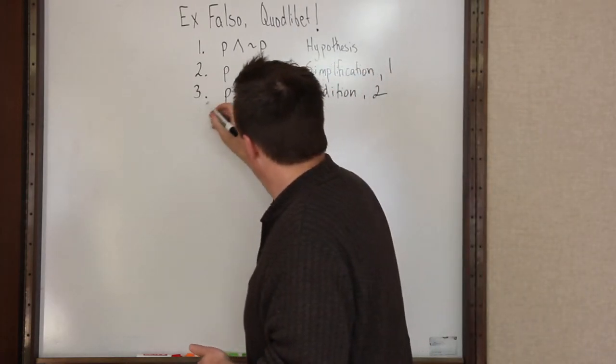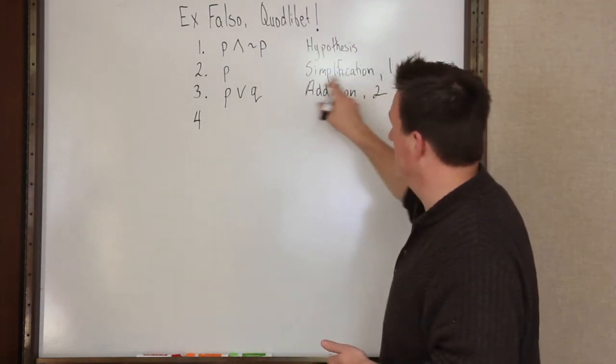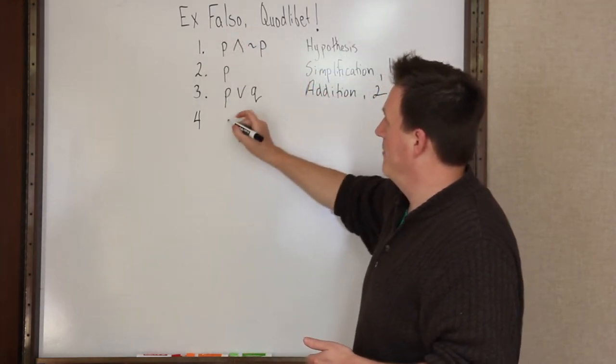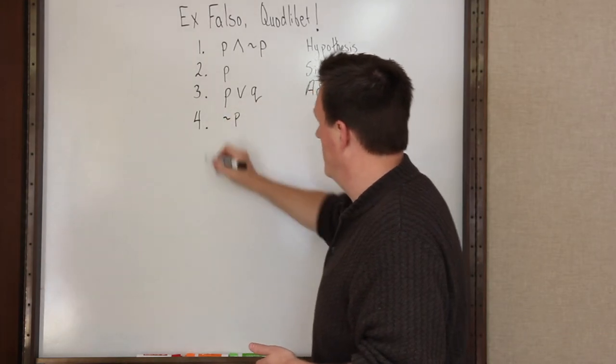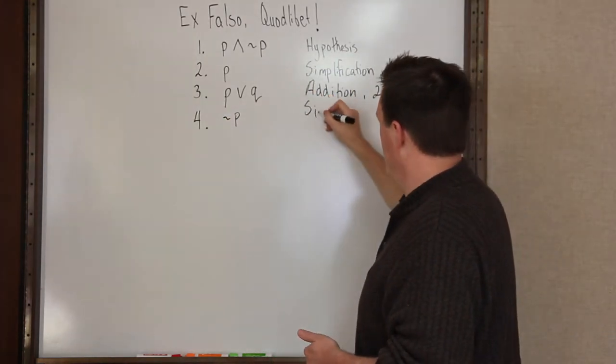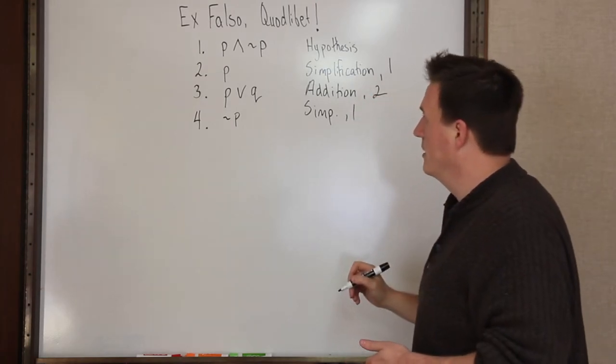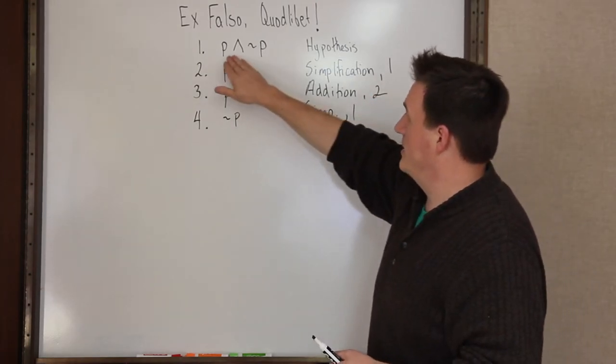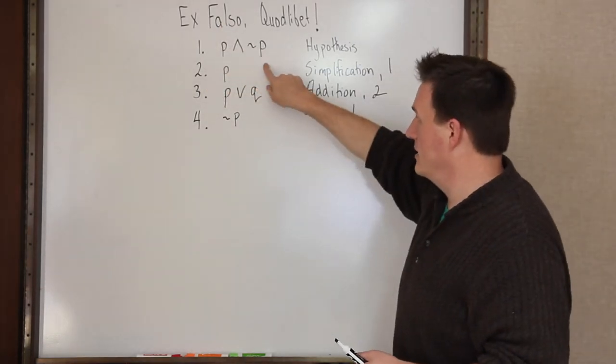And then we can derive again, using the same rule of simplification, we can derive the second half of the sentence, which is it is not the case that P from simplification of line one. So in just the same way that we were able to isolate just the first clause of this sentence, we can isolate just the second clause.